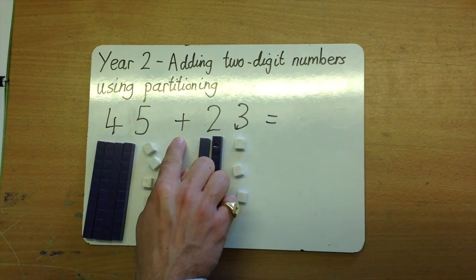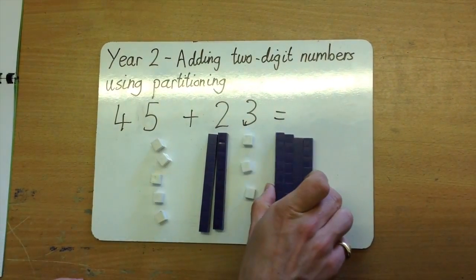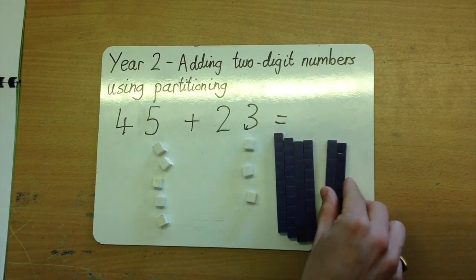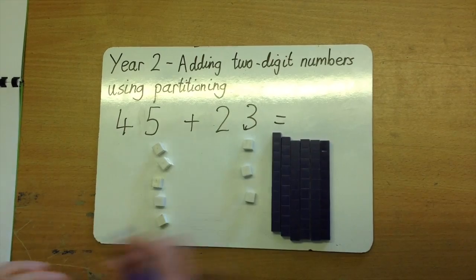As we're adding, first of all, we're going to add together the tens. 4 tens add 2 tens. 4 add 2. It's 6 tens. 60.